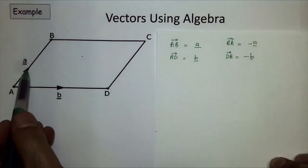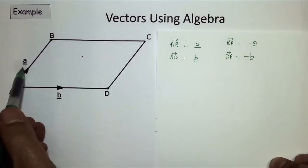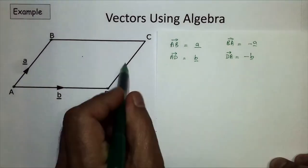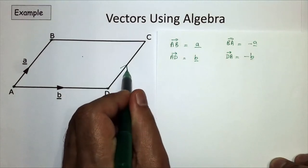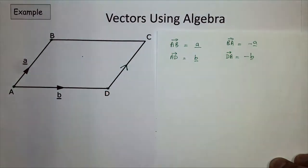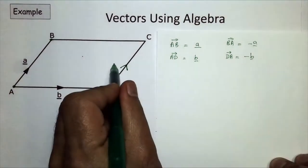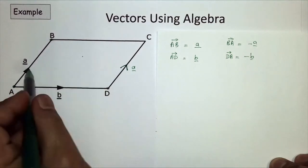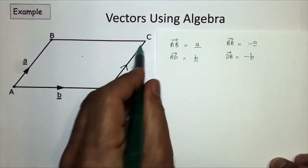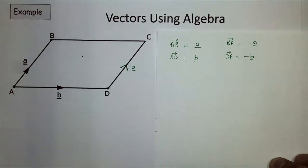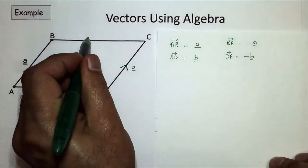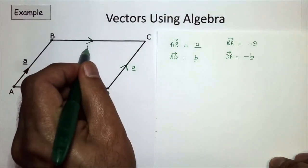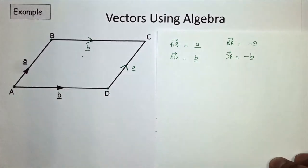The other thing is, if this is a parallelogram, the opposite sides will be the same. So if that is vector a, this will also be vector a - the opposite sides are the same, going in the same direction because they're parallel and also the same length. And again, vector b is also there on the opposite side, because they're going parallel and are the same length.